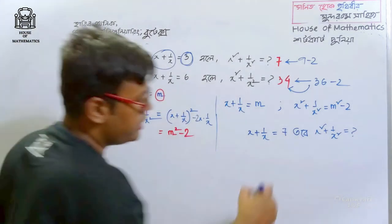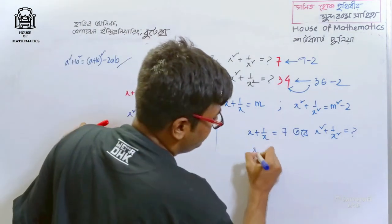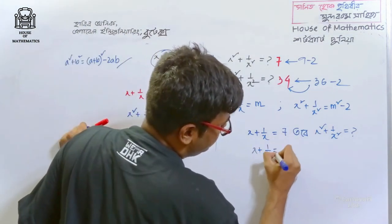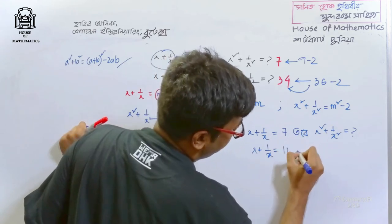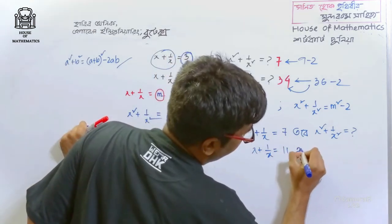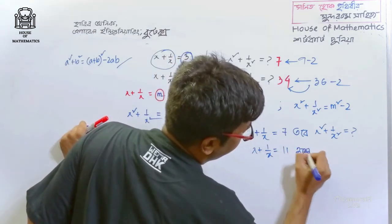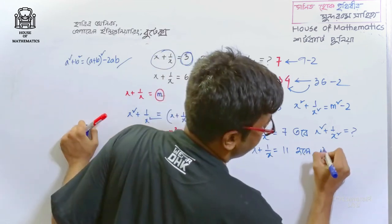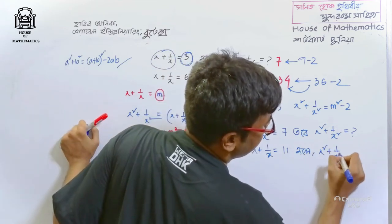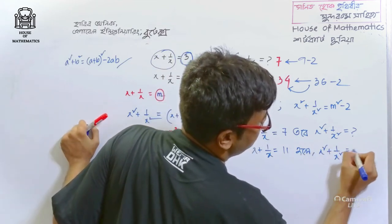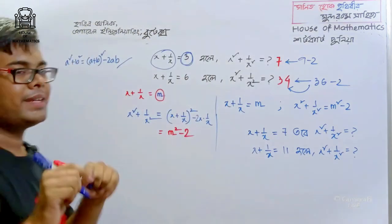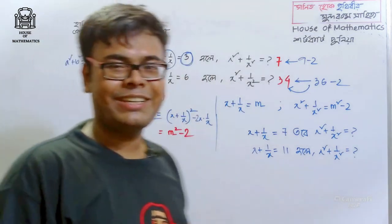Please come and let me know. If x plus 1 by x is equal to 11, then x squared plus 1 by x squared is equal to how much? Let me know in the comments, there is a shortcut to solve this.